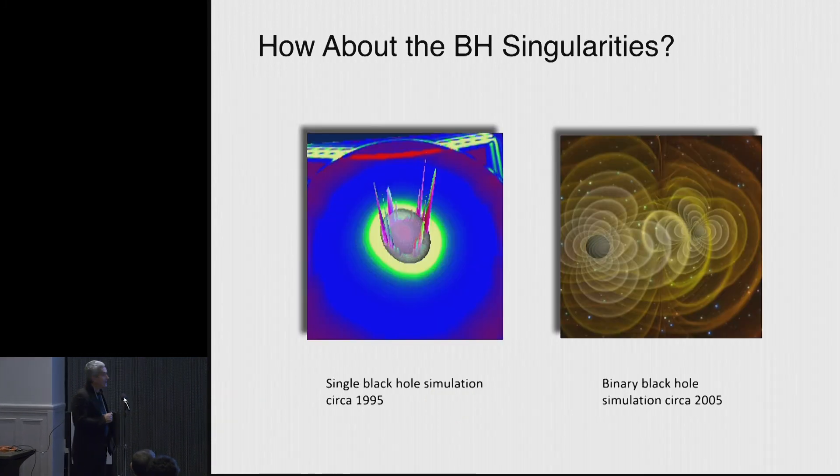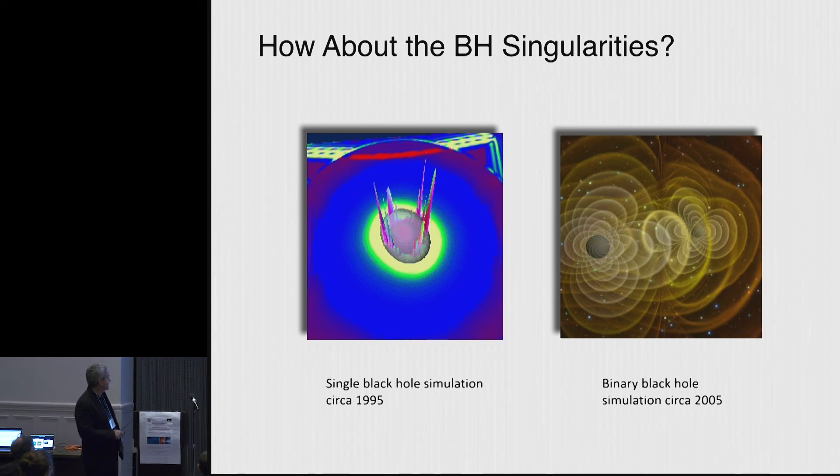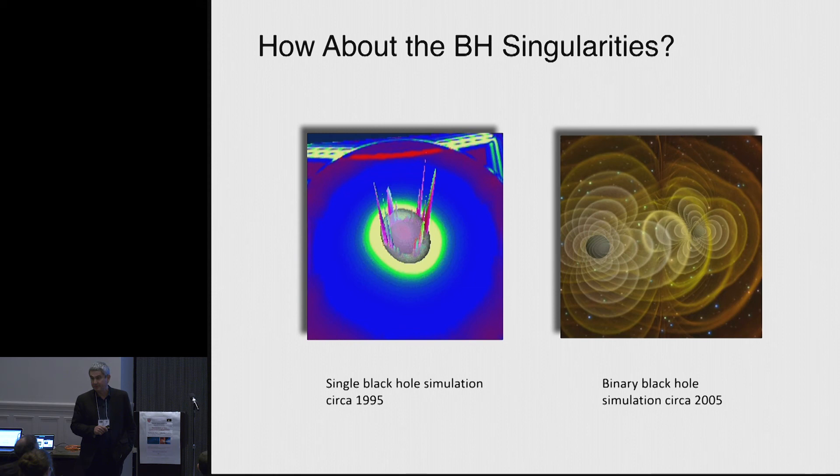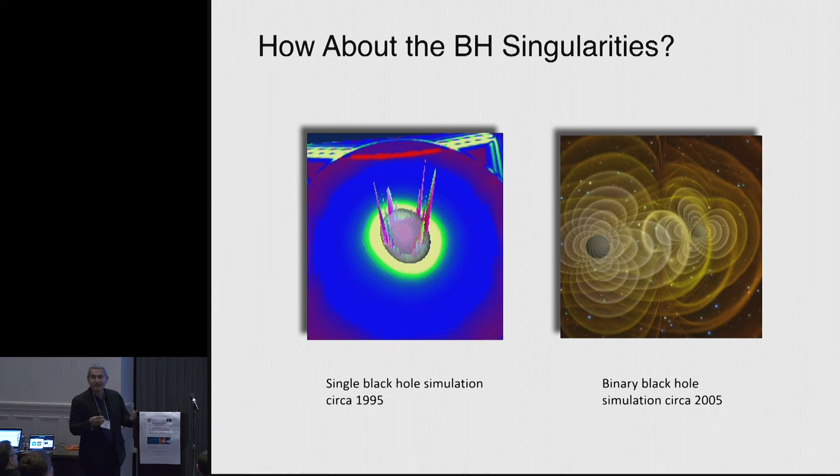So but how about the black hole singularities? At the time that this Grand Challenge Alliance started, this was the type of simulations that we were able to do. This is a single black hole in which we just put the Schwarzschild metric in. And after just not even a hundred steps, immediately things started going bad. And notice also that the computational domain was very modest. This is the horizon and this is the outer boundary. And you see there are already problems there.